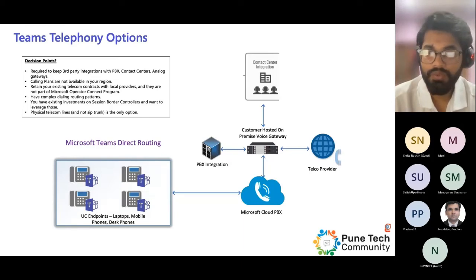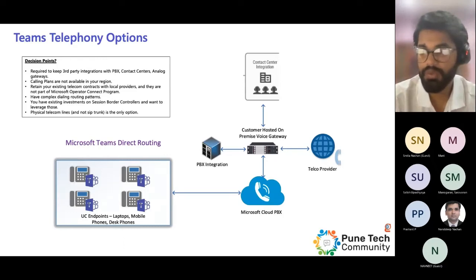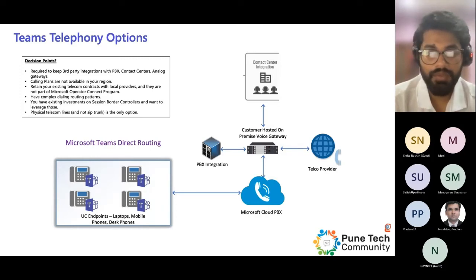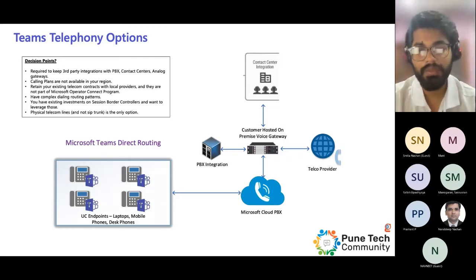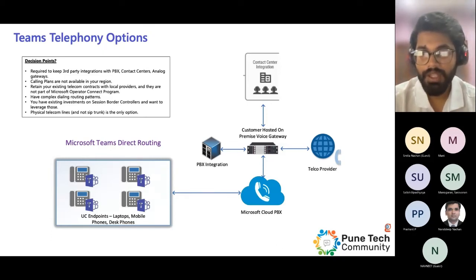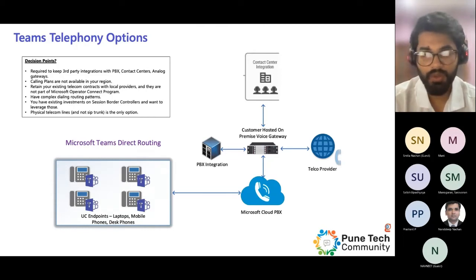With Teams direct routing, you get the most flexibility in choosing the right telecom carriers, choosing the technology for your telecom trunks, and managing the complete infrastructure end-to-end. The first decision point for direct routing is that you have heterogeneous telephony elements in your organization and want inter-call routing among all of them. These elements could be anything like a contact center, analog devices, PBX phones, or DECT phones — for example, a Teams user wanting to call an analog phone, or a PBX user wanting to call a Teams user. All of these call routing scenarios are possible with a Session Border Controller in place.